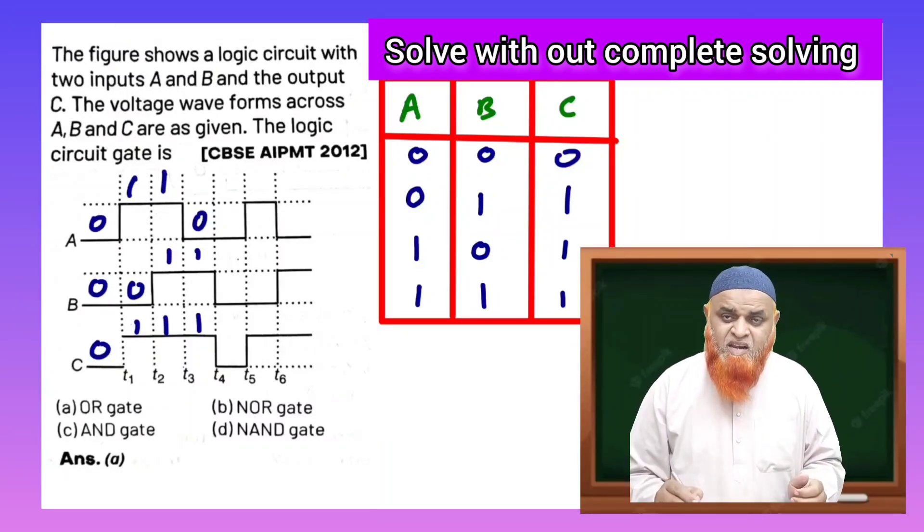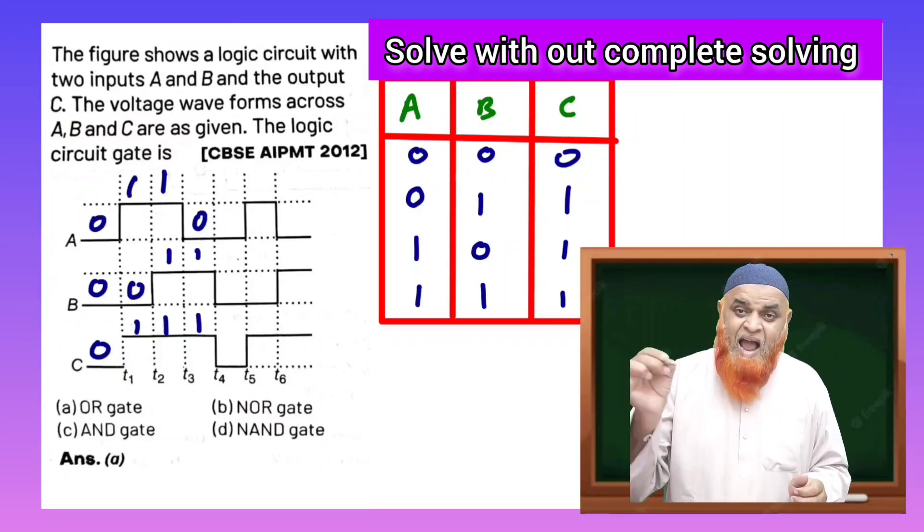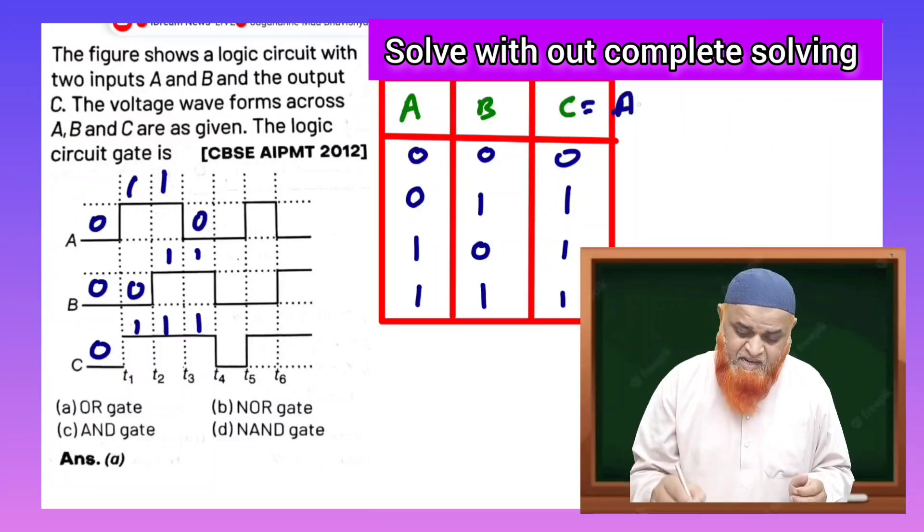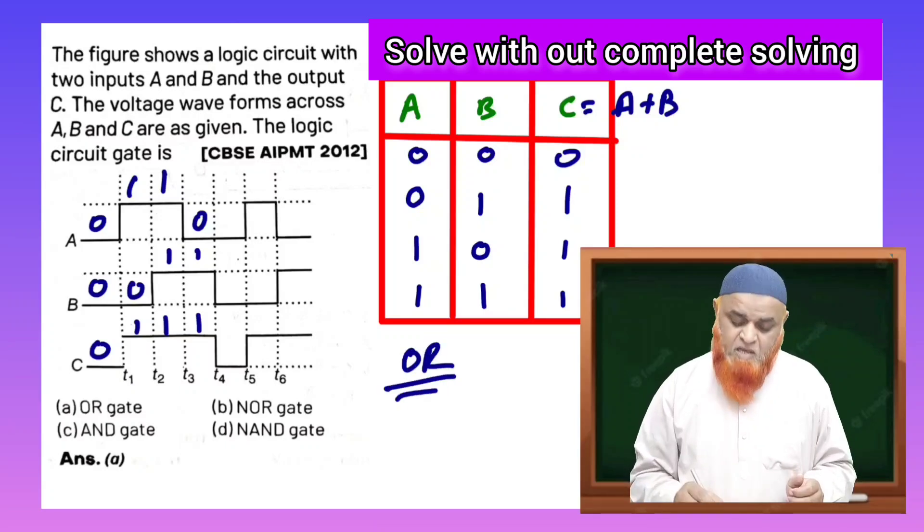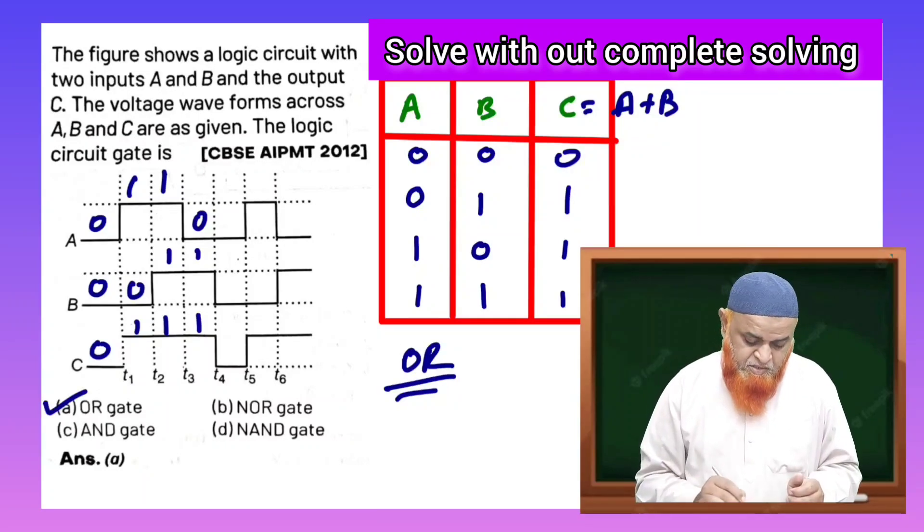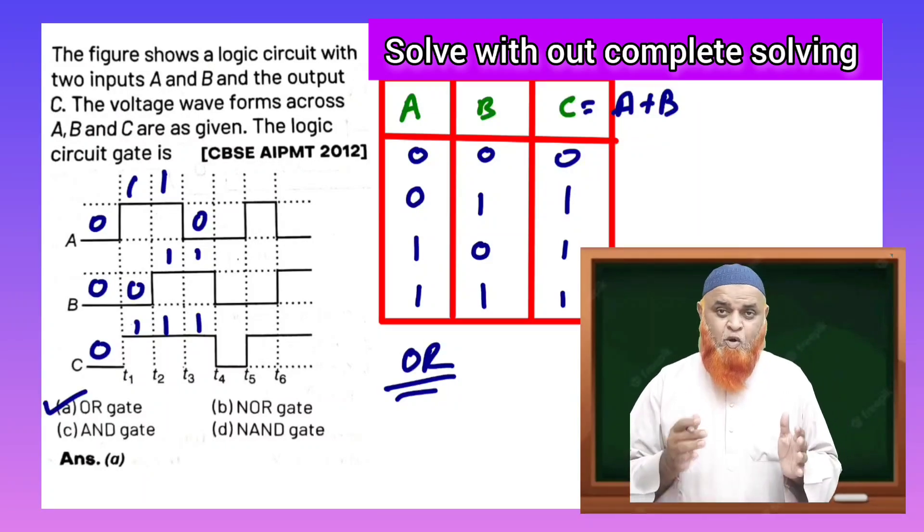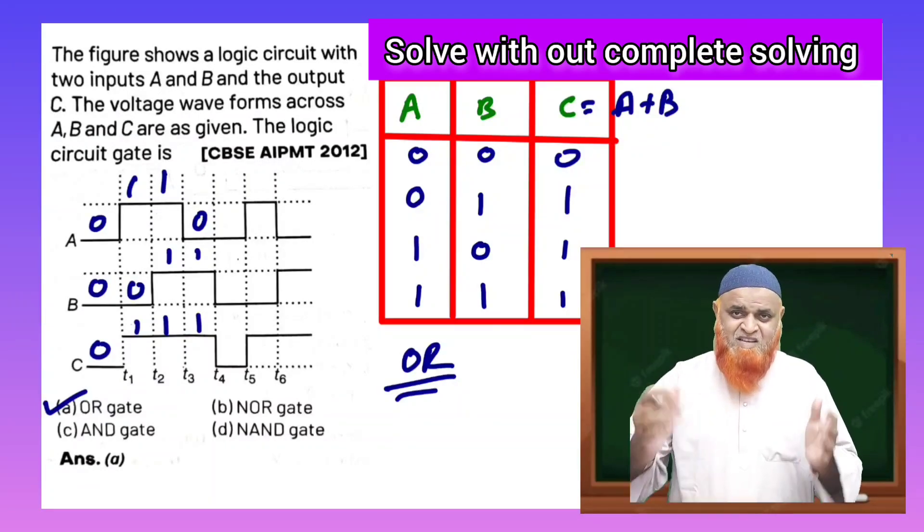So this is 0 1 1 1 is going to be an OR gate. You know it's an OR gate. It is having addition operation A plus B. It's an OR gate. That's it. So your answer is A, option A. Hope you have understood. Thank you very much. Have a nice day.